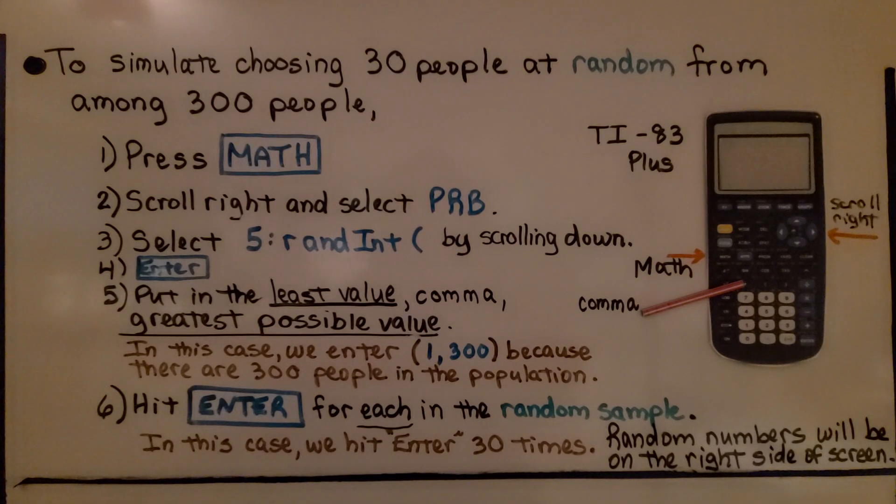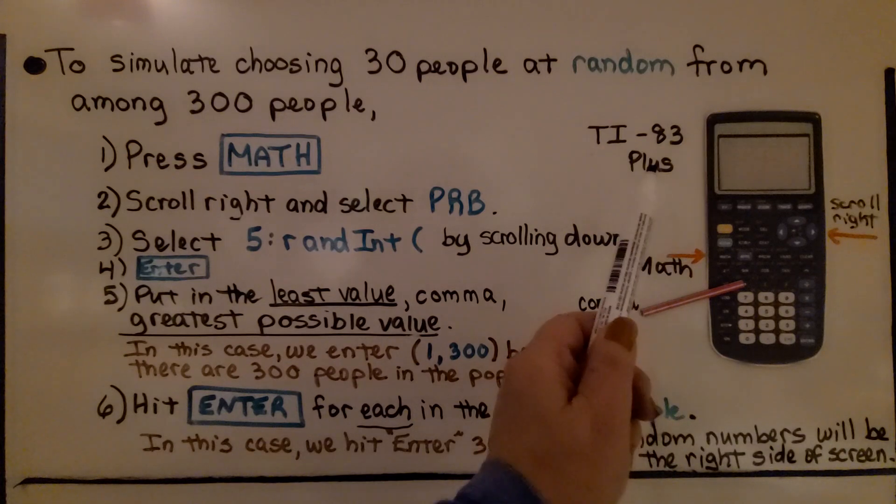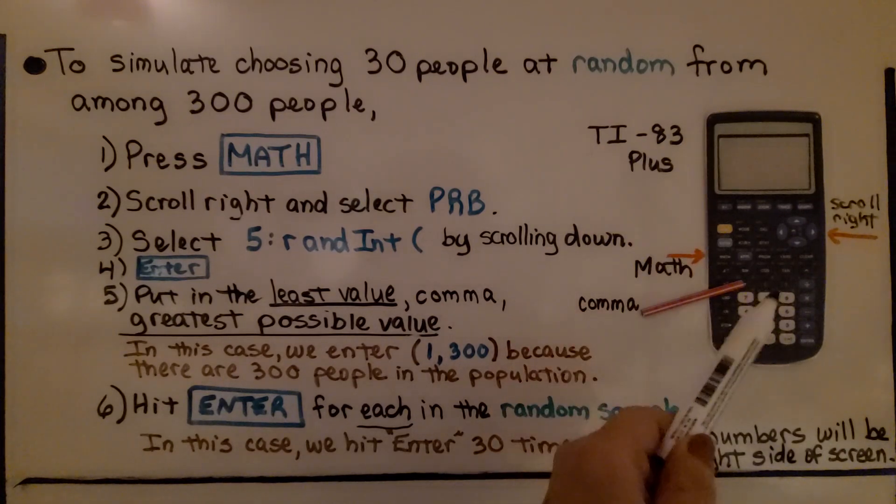So let's say we want to simulate choosing 30 people, or 30 numbers, at random from among 300 people. Here's the Texas Instrument TI-83 Plus Calculator, that's what we're going to be using.